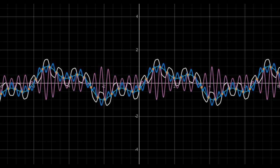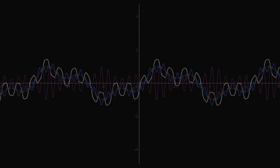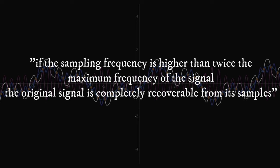In 1949, Claude Shannon and Harry Nyquist proved that when sampling a signal, if the sampling frequency is higher than twice the maximum frequency of the signal, the original signal is completely recoverable from its samples.